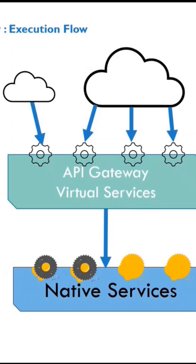At any given time, the traffic flows from north to south in the fashion such that the virtual APIs on the API gateway are invoked by the consumer, and that in turn hands off the traffic to the native services.